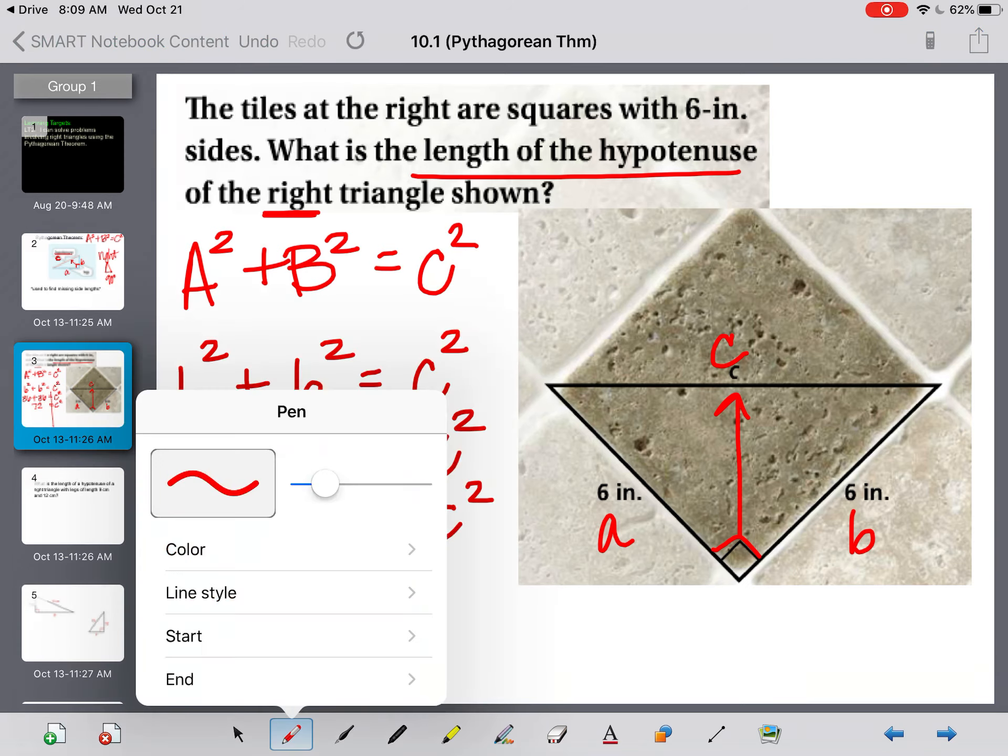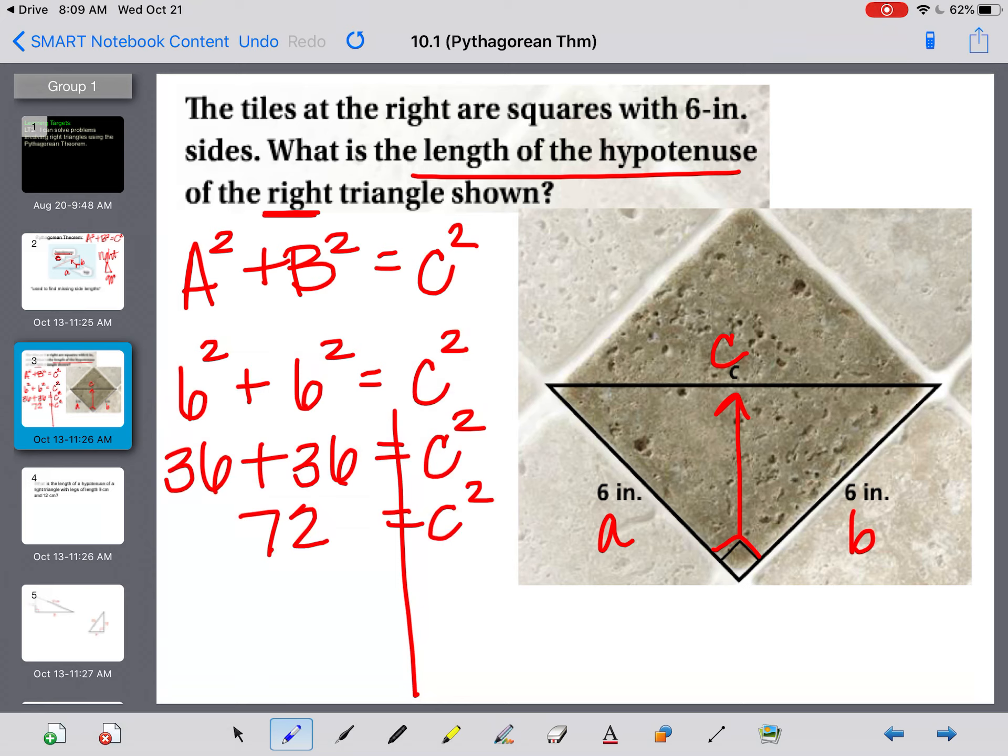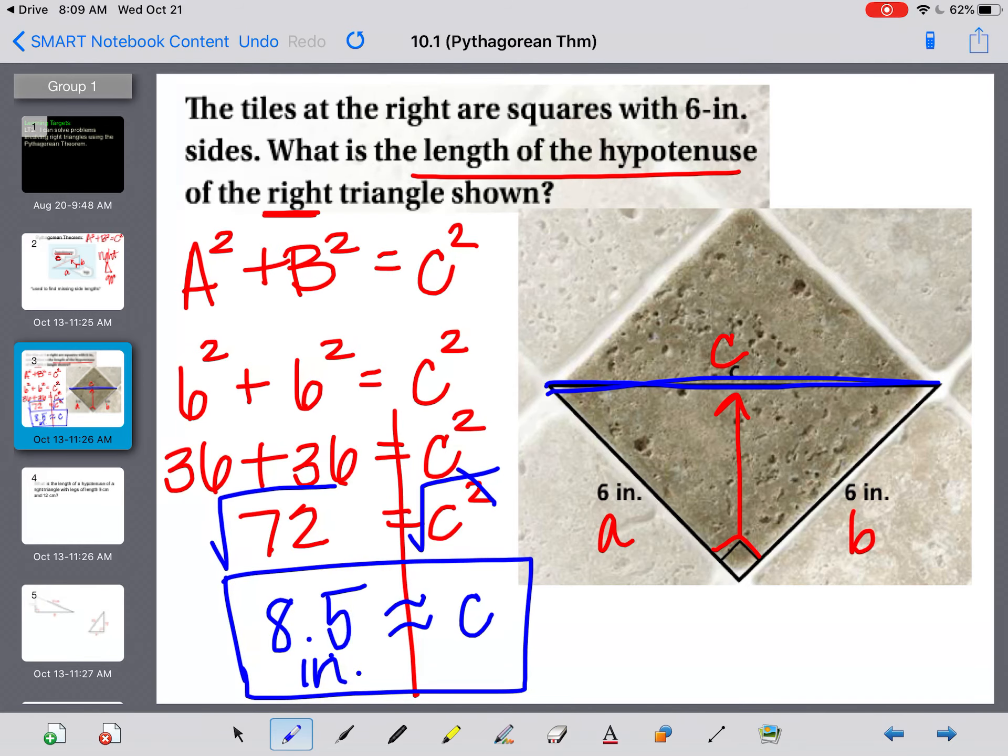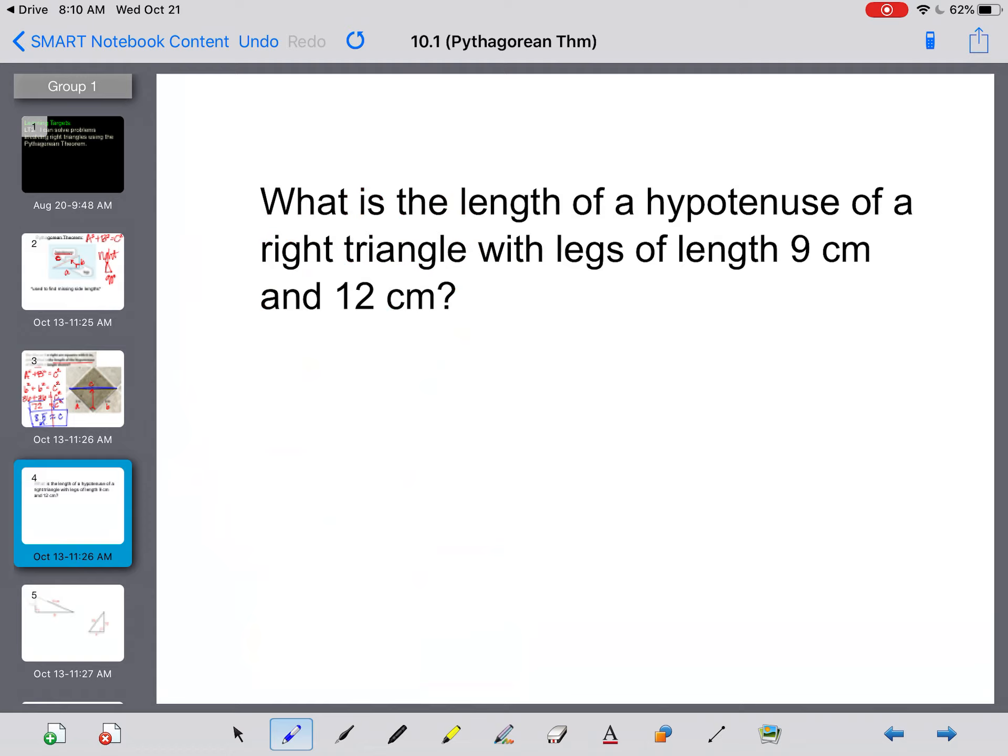And a lot of people make the mistake of stopping here, but I don't want to know what C squared is. I need to know what C is. So I need to undo that squaring. The opposite of squaring something is to take the square root. And if you remember, whatever I do on one side, I have to do on the other side. And it doesn't tell you, but I'm going to round to the nearest tenth, if that's necessary. And when I take the square root of 72, that gives me about 8.5. And that also cancels out the squared. So now I know that my side C, or my hypotenuse up here, is about 8.5 inches across.